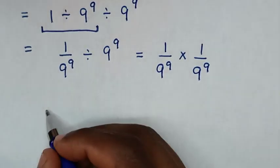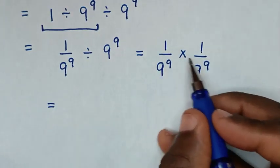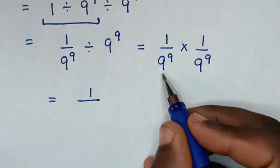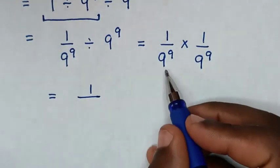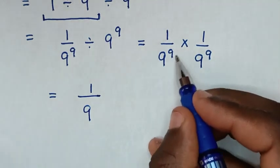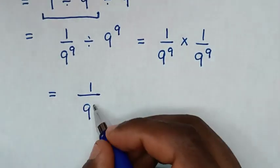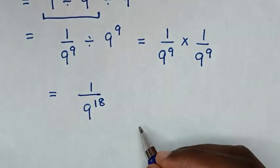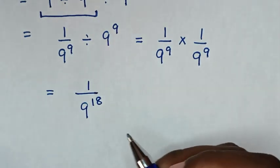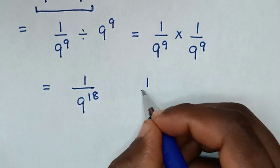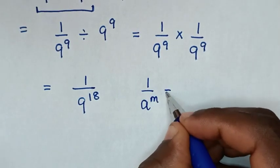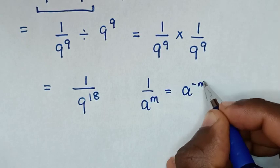Then it will be equal to 1 times 1 is 1, over 9 power 9 times 9 power 9, which is 9 power 9 plus 9, which is 9 power 18. So from here, 1 over 9 power 18 is in the form of 1 over a power m, which is equal to a power negative m.